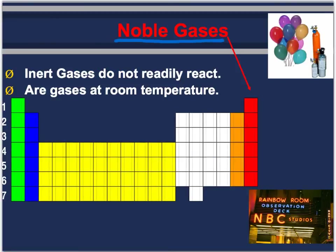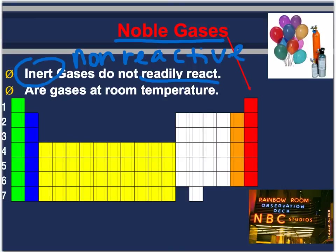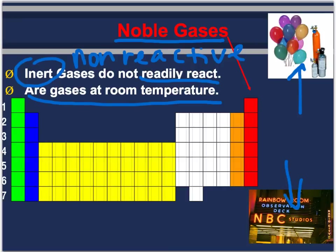The last thing I want to talk about are noble gases. They're called inert, which means non-reactive — they do not readily react, and they're gases at room temperature. Examples include helium and neon. That concludes part two of this video. If you had any questions, please write them down. If you need more information, you can look back in your textbook, and feel free to ask me questions in class. Have a good night.